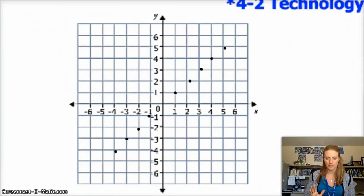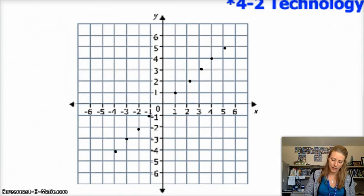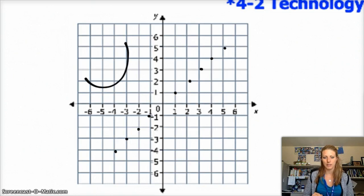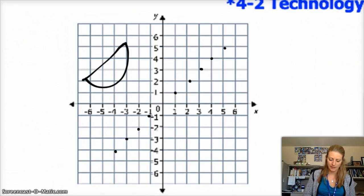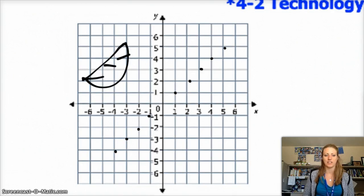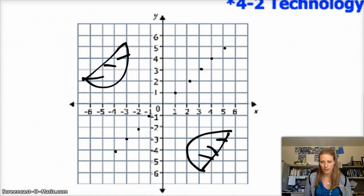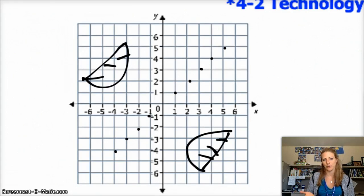So if you have a function or a graph, its inverse is a reflection over the line y equals x. So if I have some shape here, like an orange slice or a potato, then its reflection or its inverse is going to be a reflection over that line y equals x.